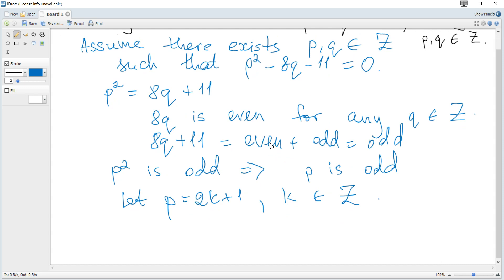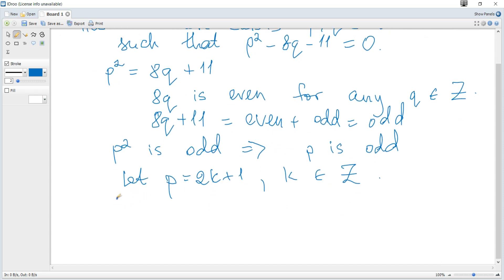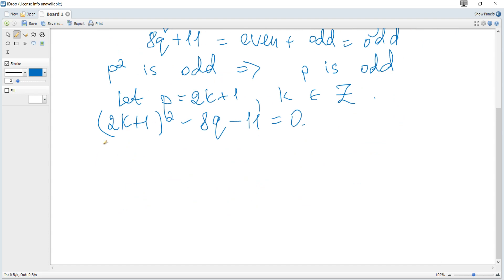Let's rewrite our equation. So it becomes (2K + 1)² - 8Q - 11 = 0. Let's expand this. So it becomes 4K² + 4K + 1 - 8Q - 11 = 0.